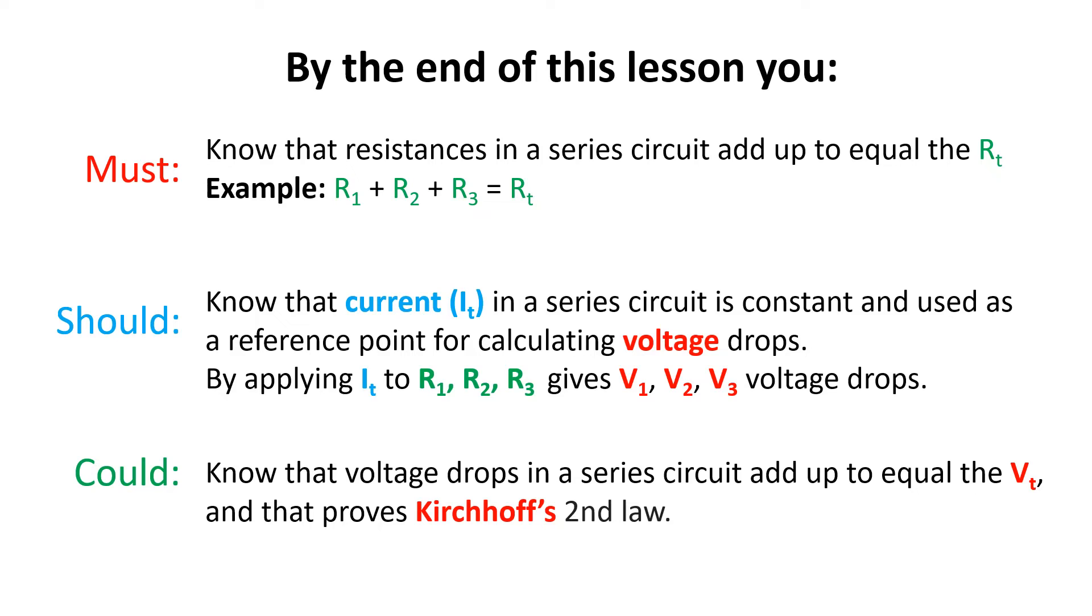Essentially, if you subtract each individual voltage drop away from the voltage total, then you would get zero. Equally, if you add all the individual voltage drops up, you would get the voltage total. It's one and the same.